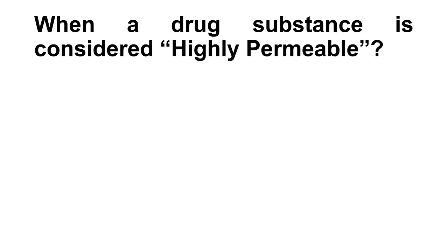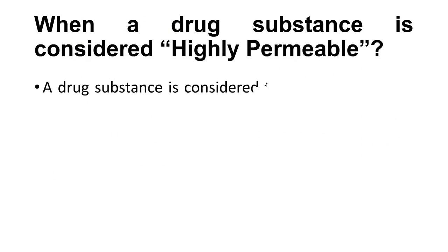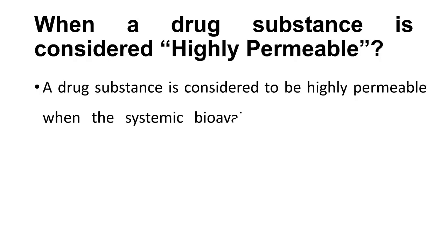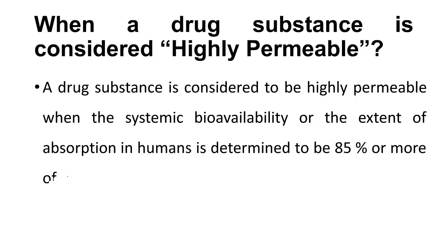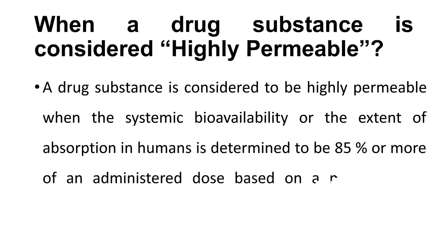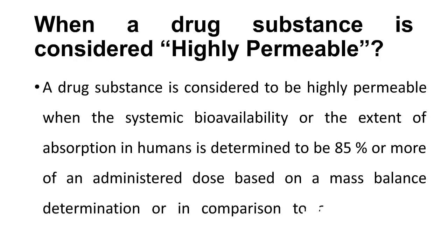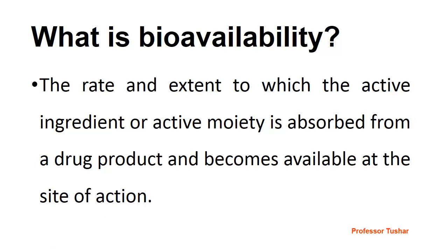When is a drug substance considered highly permeable? A drug substance is considered to be highly permeable when the systemic bioavailability or the extent of absorption in humans is determined to be 85% or more of an administered dose, based on a mass balance determination or in comparison to an intravenous reference dose.